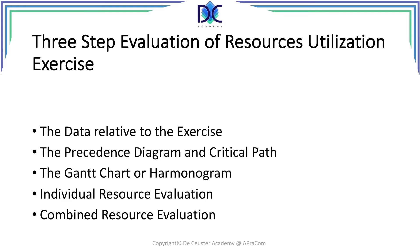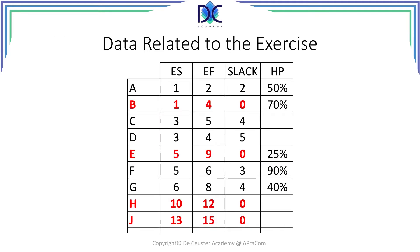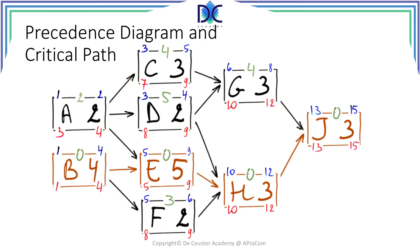We do this in an exercise. We will look at the information of the exercise, the precedence diagram, the basic Gantt we will be using, and then we will evaluate the resources utilization in the Gantt itself. This is the same exercise we already did in section 7, but now I added information about the resource Harry Potter, who is working on activities A, B, E, F, and G. The precedence diagram and the critical path you may still remember from the previous sections.